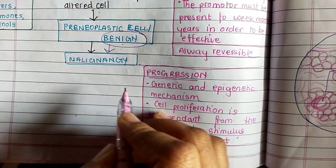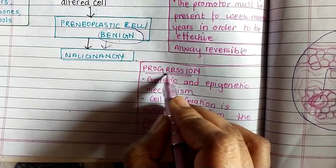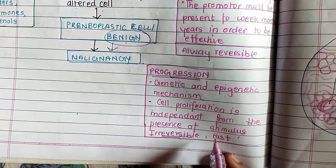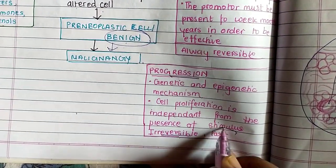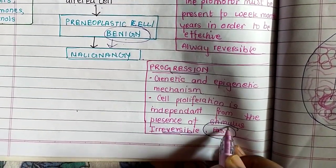The third step is progression. Here, genetic and epigenetic mechanisms drive cell proliferation that is independent from the presence of the stimulus. Progression is always irreversible and is quite fast.